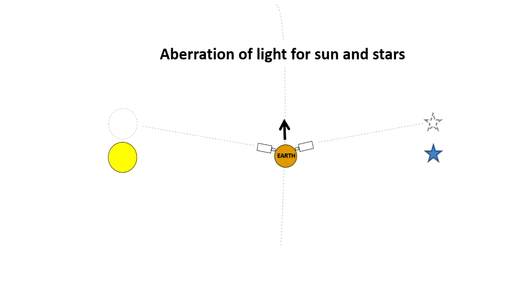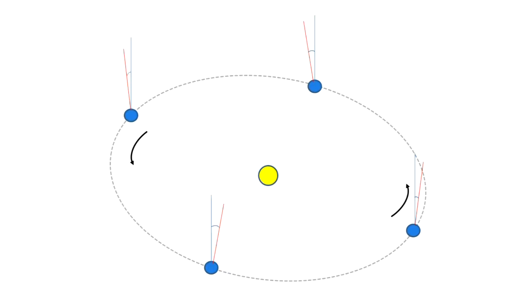The effect is observed from Earth for distant stars and for the Sun. Stars near the North Pole seem to be moving in a circle throughout the year. In this image, the blue line indicates the true position, and the red line indicates the apparent position.